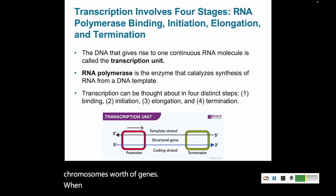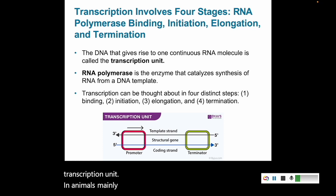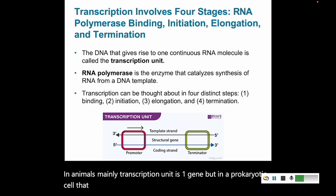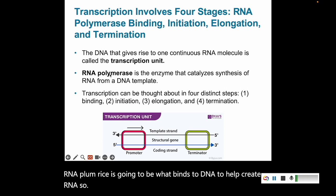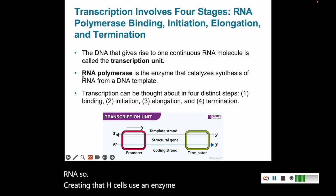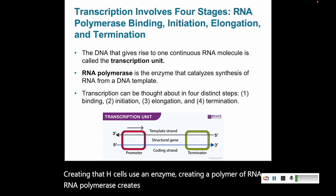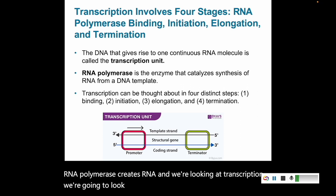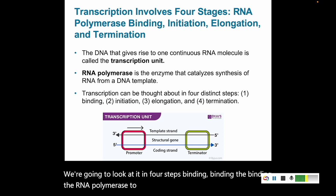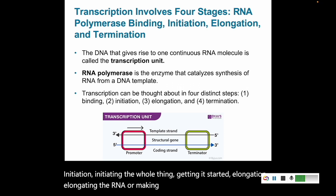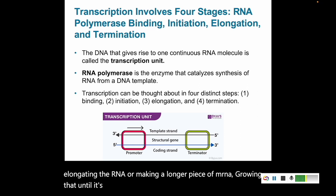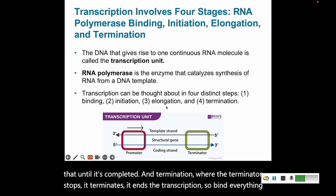When DNA creates one piece of RNA molecule, that's called a transcription unit. In animals, a transcription unit is mainly one gene, but in a prokaryotic cell a transcription unit could have more than one gene. RNA polymerase is what binds to DNA to help create RNA — it's the enzyme that creates a polymer of RNA. We're going to look at transcription in four steps: binding (the RNA polymerase binding to DNA), initiation (getting it started), elongation (growing the RNA until it's completed), and termination (where the terminator stops and ends the transcription). So: bind everything together, get it started, make it longer, and finish.